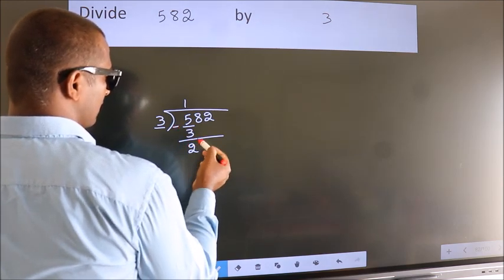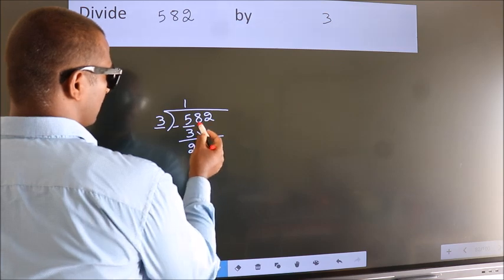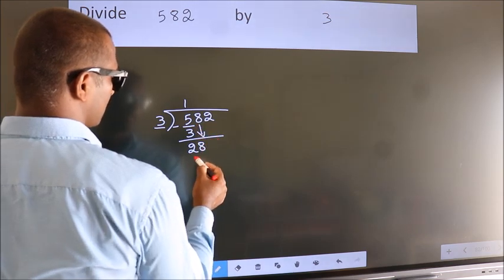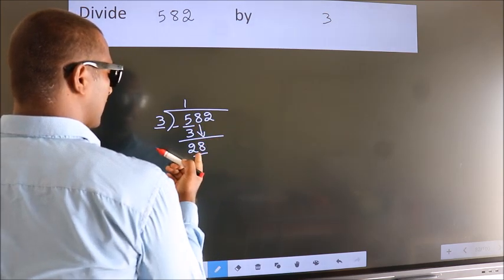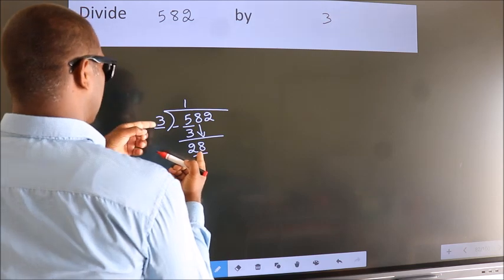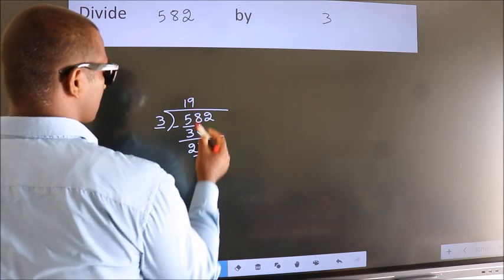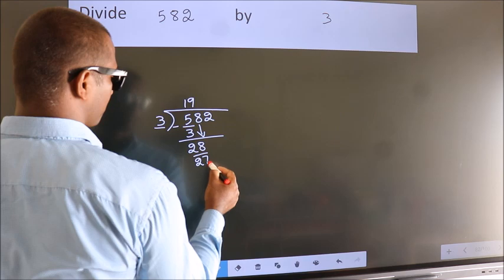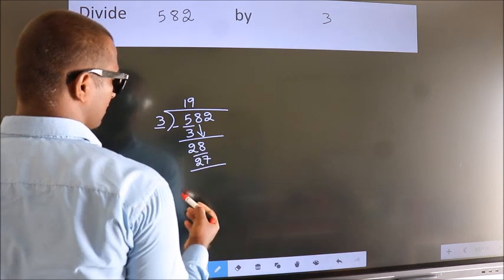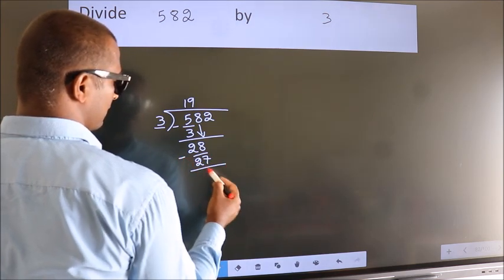After this, bring down the beside number. So, 8 down. So, 28. A number close to 28 in the 3 table is 3 times 9 equals 27. Now we subtract. We get 1.